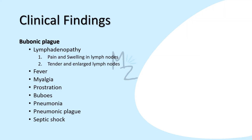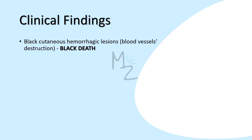Clinical findings: bubonic plague, the most frequent form, begins with pain and swelling of the lymph nodes draining the site of the flea bite, along with systemic symptoms like high fever, myalgias, and prostration. The affected nodes enlarge and become exquisitely tender — the buboes are an early characteristic finding. Septic shock and pneumonia are the main life-threatening subsequent events. Pneumonic plague can arise from inhalation of an aerosol or from septic emboli reaching the lungs. In black death, cutaneous hemorrhagic lesions destroy blood vessels.